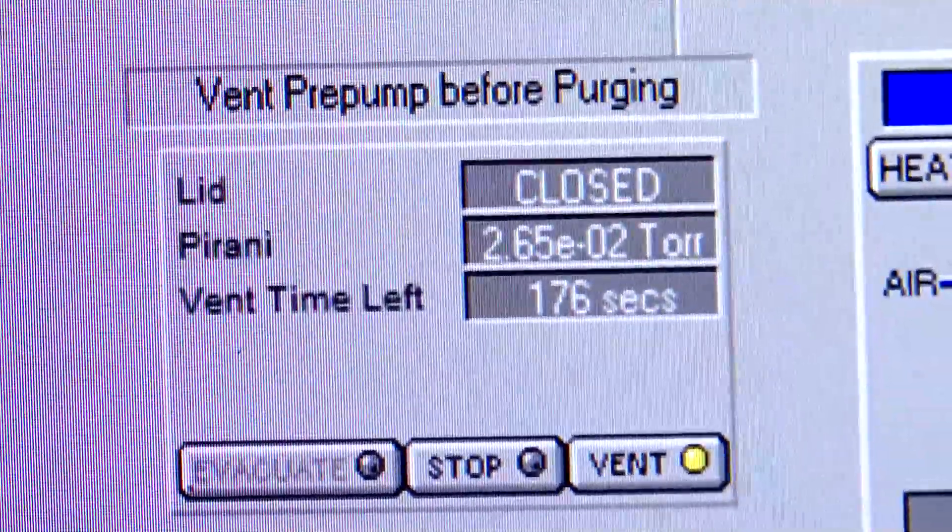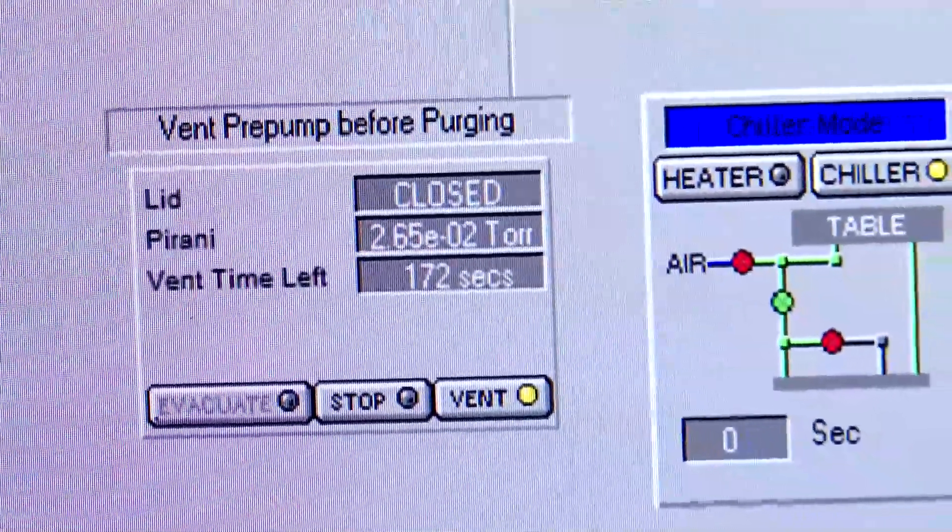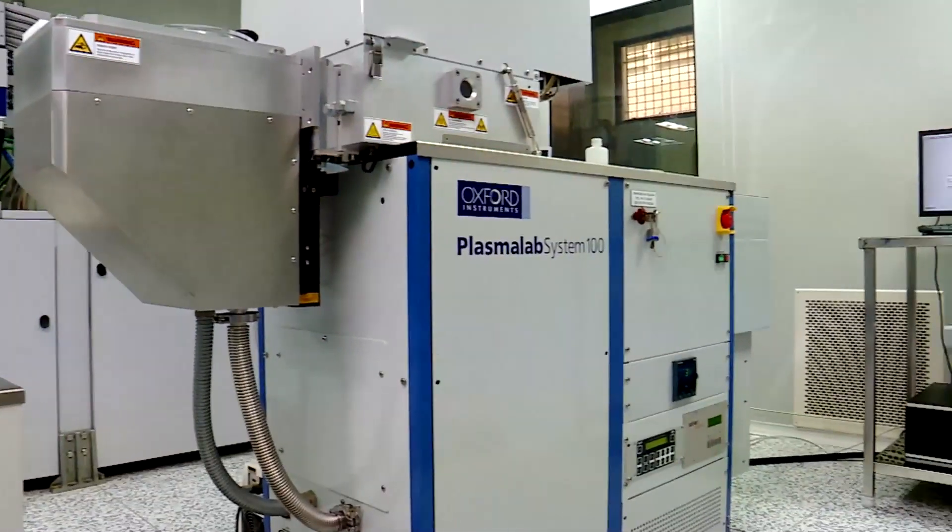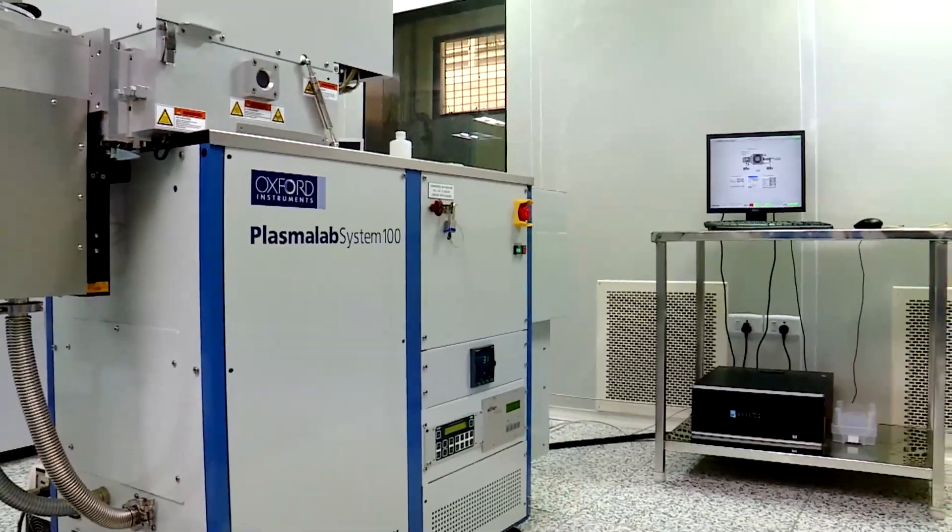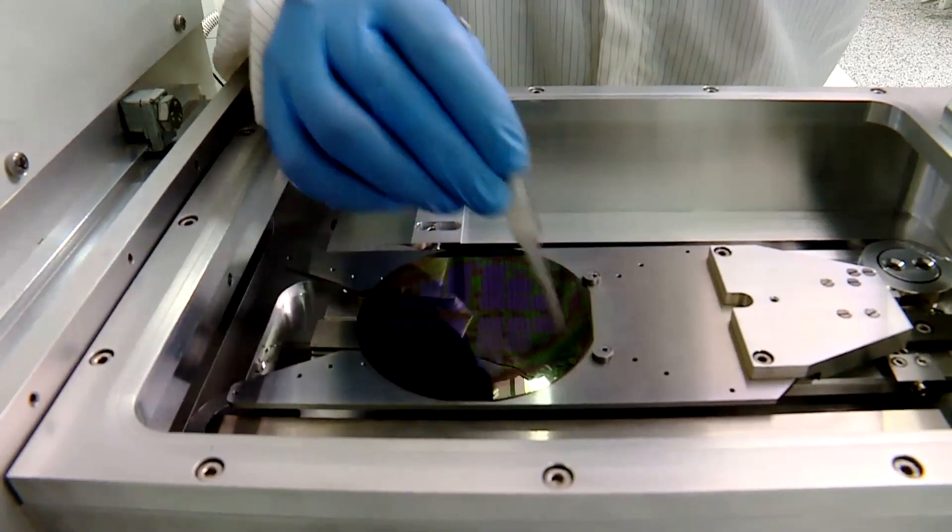The pressure in the load lock side will slowly come to the atmospheric pressure. Once our chamber is vented, we can start loading our sample. We will load the sample following the particular orientation as directed here.